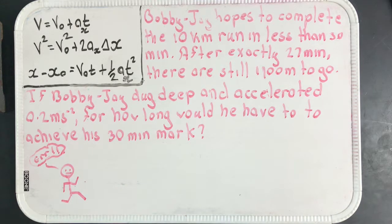So there are a lot of things happening right now. Bobby J is running this race and when he hits the 27-minute mark he realizes that he still has 1100 meters to go, and right now he's going to accelerate. The question asks for how long is he going to accelerate in order to complete the 10k run in less than 30 minutes.